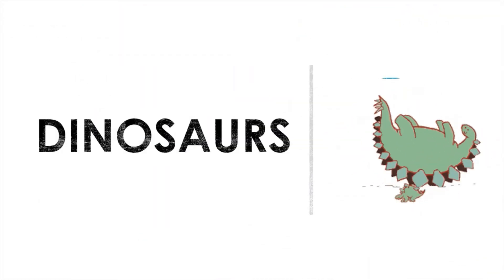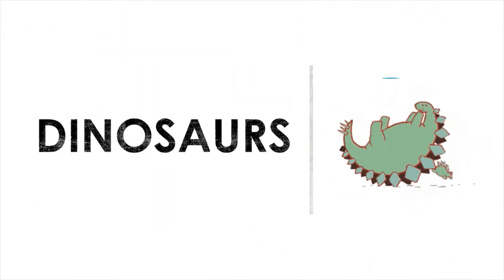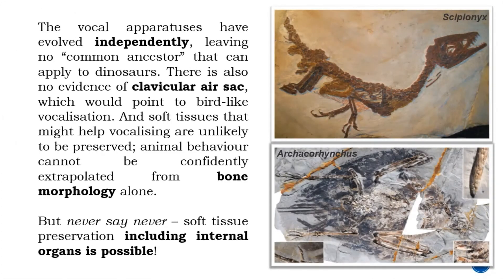But how can we use that information to understand how dinosaurs sounded? After all, the vocal practices have evolved independently, leaving no common ancestor that can be applied to dinosaurs. There's also no evidence of cervical air sacs, which would point to bird-like vocalization, and soft tissues that might help with vocalizing are unlikely to be preserved. Animal behavior can't be completely extrapolated from bone morphology alone. But never say never — soft tissue preservation, including internal organs, is possible.